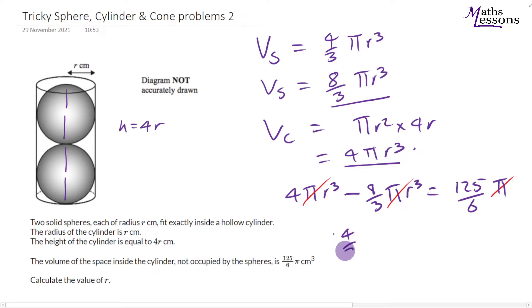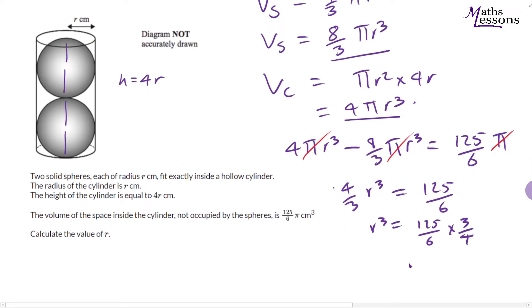So that's going to be 4/3 r cubed will equal 125 over 6. So r cubed will equal 125 over 6 times 3/4. If we divide by 4/3 it's the same as times by the fraction flipped. So what have we got here? We can cancel the 3 with the 6 to leave 125 over 2 times 4 which is 8. Now 125 is 5 cubed and 8 is 2 cubed.